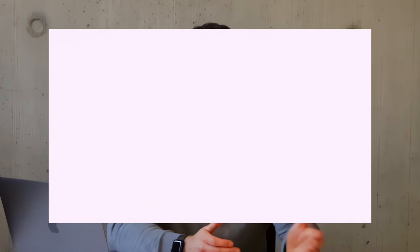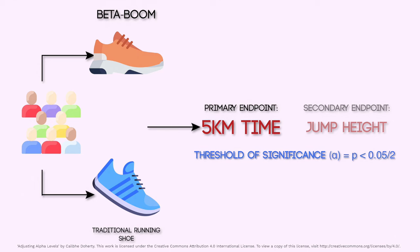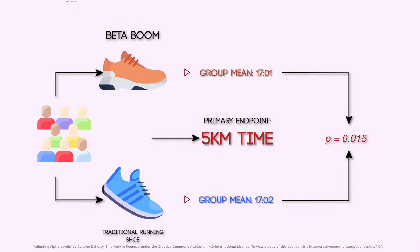Taking the beta boom example, if the researchers also wanted to look at vertical jump height in addition to performance during the 5km time trial, they might use a Bonferroni-adjusted threshold of 0.025, or 0.05 divided by 2. Now, results can be statistically significant, but that doesn't mean the effect is important or meaningful. An effect can be significant but very small. For example, that one second average improvement in 5km time trial performance deemed statistically significant wouldn't really be that relevant to a competing athlete.